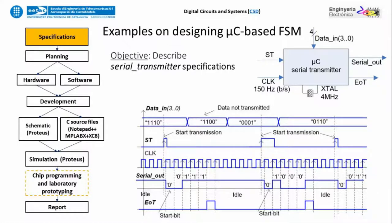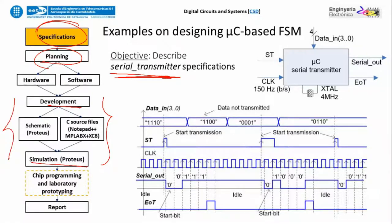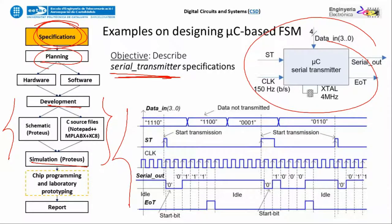This short video covers how the serial transmitter may work. We'll talk about the specifications, then present the plan, and explain in a third video the developing and simulation sections. First, we have to describe the specifications of a circuit with this symbol, which works as shown in the timing diagram — data goes in, and the serial output is generated one bit after the other. We'll solve that as a finite state machine, implemented in C for a microcontroller.